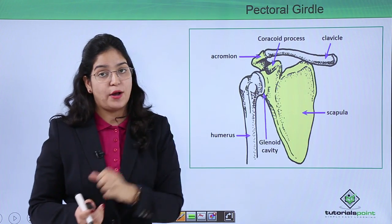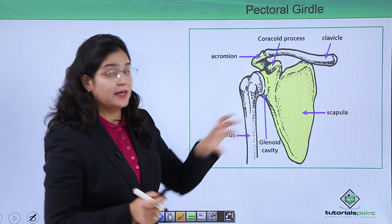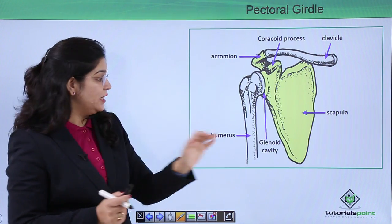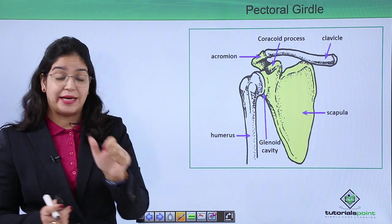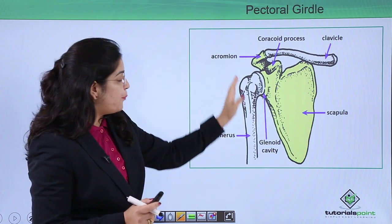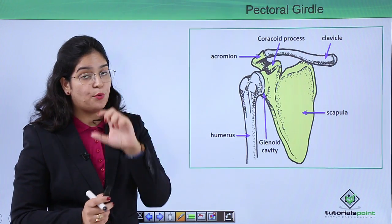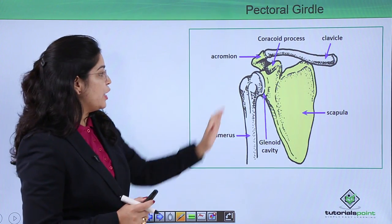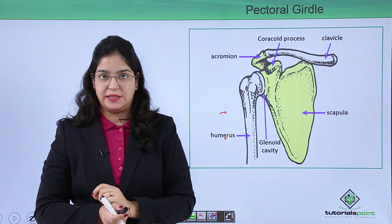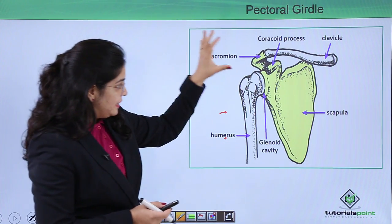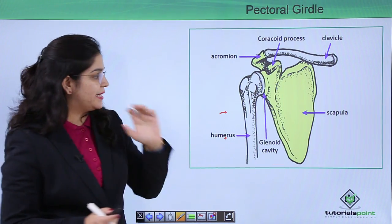The coracoid process is a very important structure because the tendons of the muscles are actually attached in this region. The pectoral girdle also contains a special cavity called the glenoid cavity, which is very important because this is where a bone articulates — the bone of the upper arm, the humerus, articulates in this glenoid cavity.